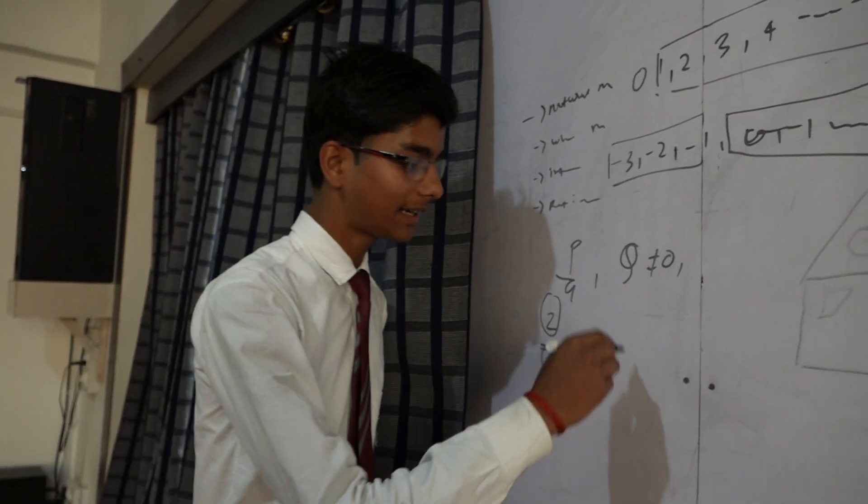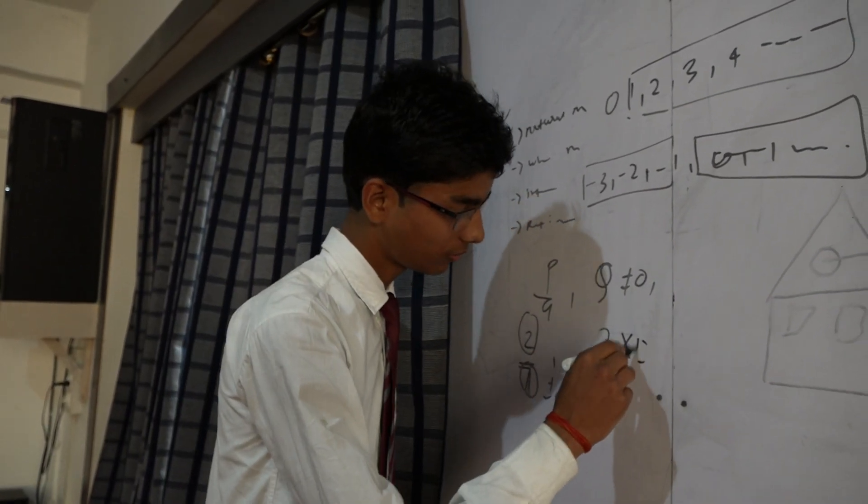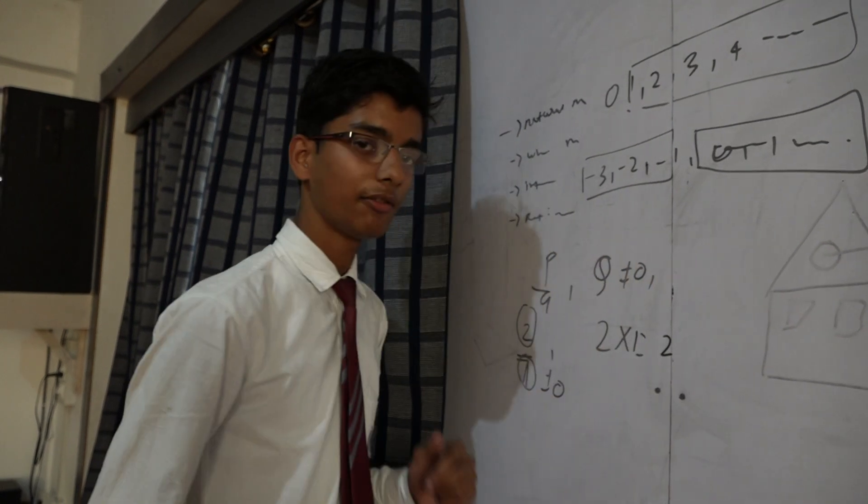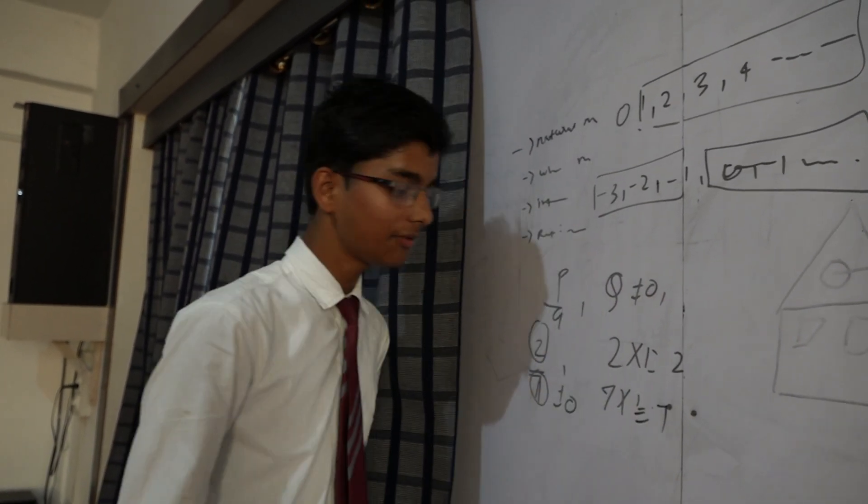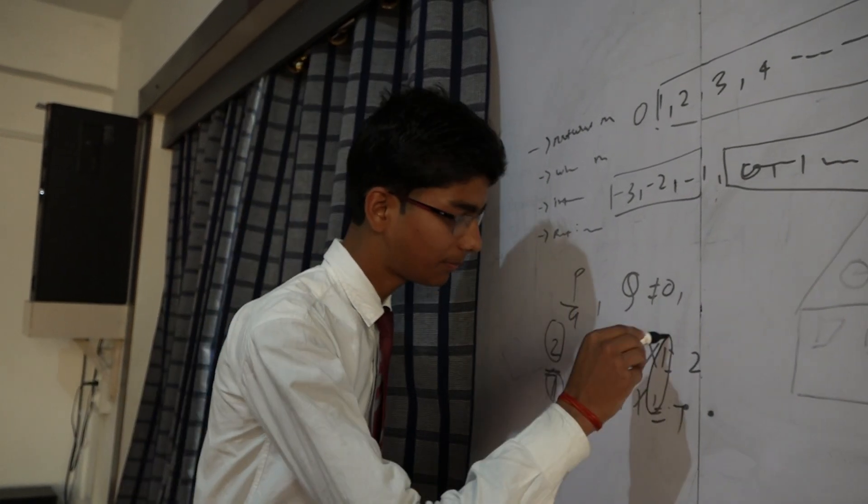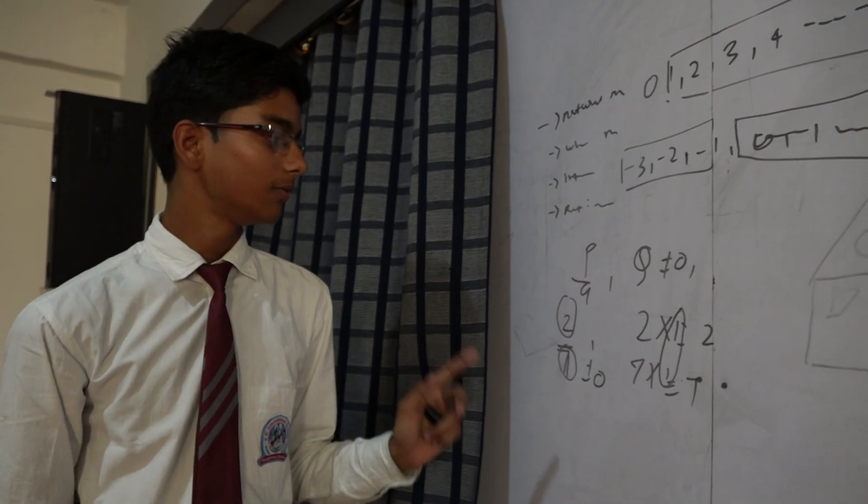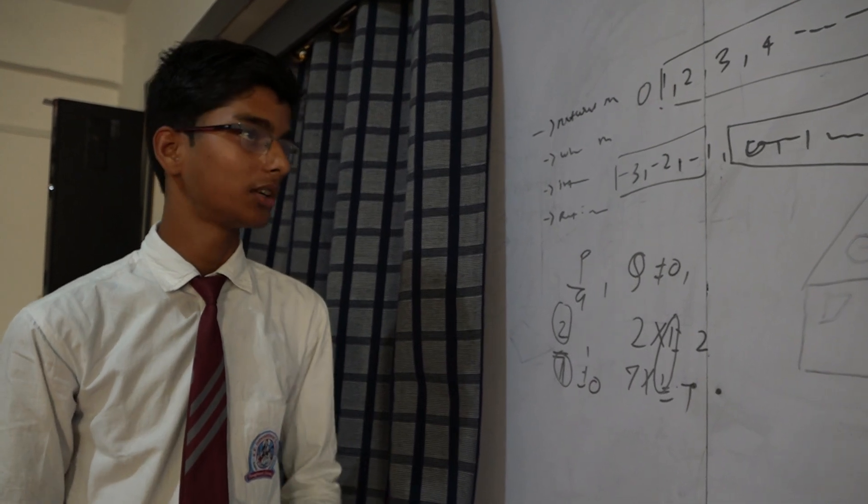And when we factorize 2 is 2 into 1 is equal to 2. And when we factorize 7, 7 into 1 is equal to 7. Here we see that 1 is a common factor between 2 and 7. So we say that 2 by 7 is a common factor is rational number.